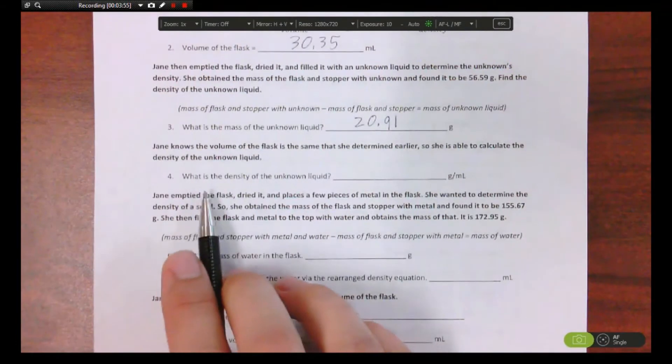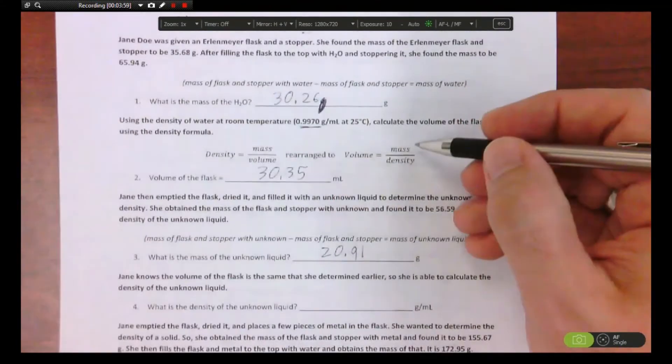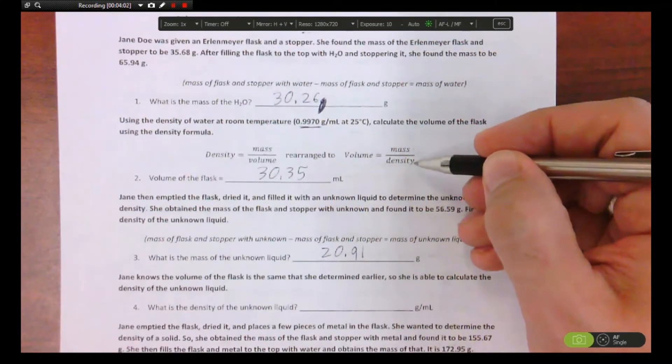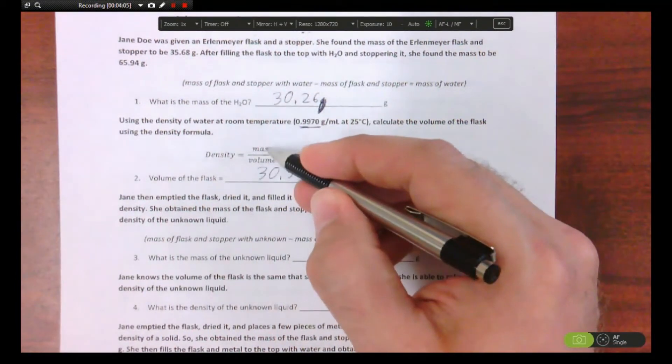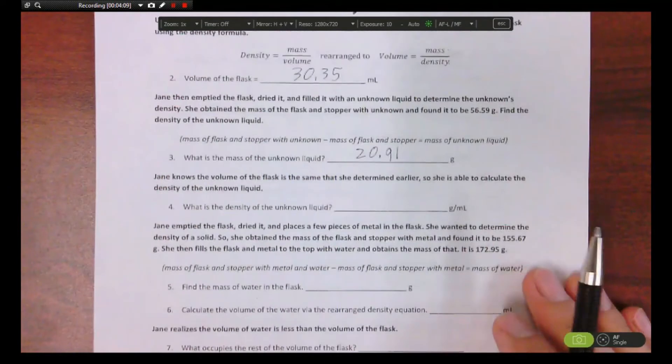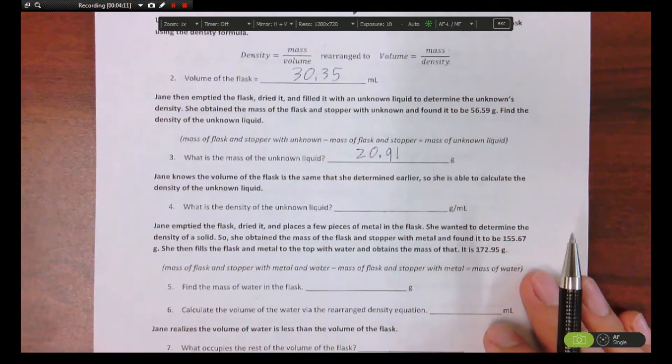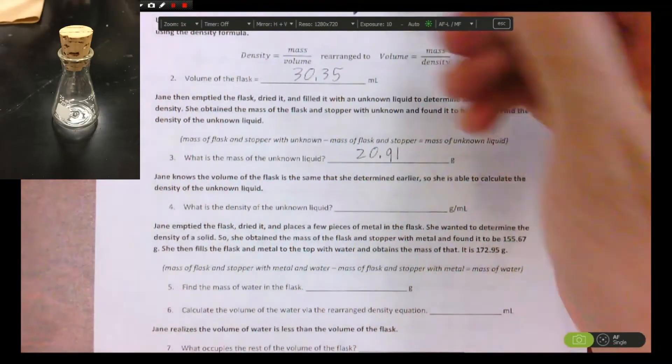Okay, so far so good. Now number four, what is the density of the unknown liquid? Well, you have the mass, okay. So back up here you have the mass, we don't know the density, so you're not going to use this formula, you're going to use this one. So mass, and you need volume. So you're like, well, how do I know the volume of the flask?